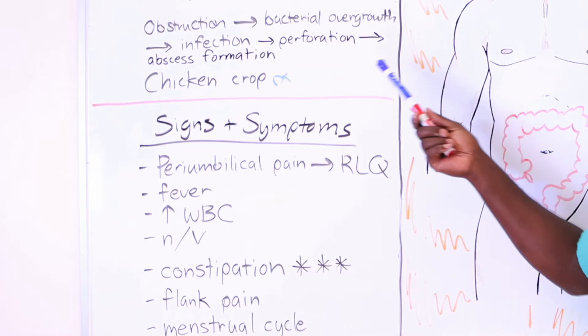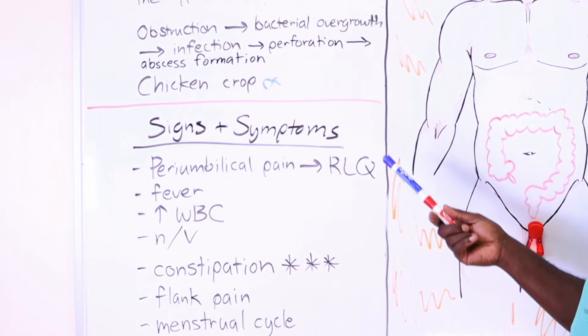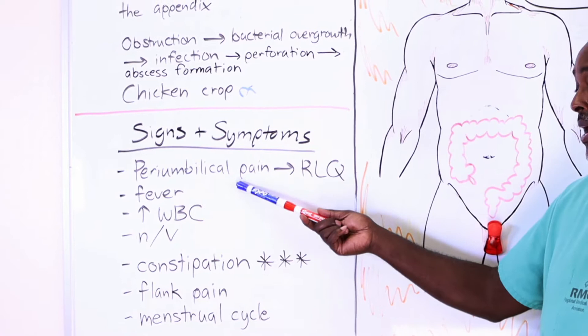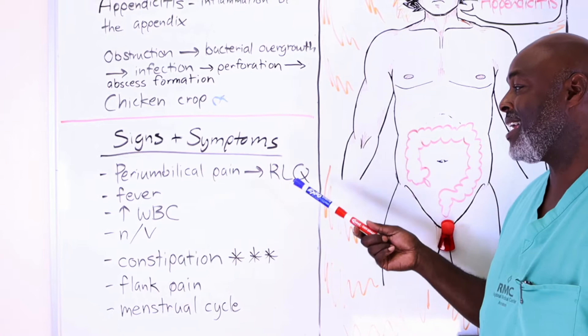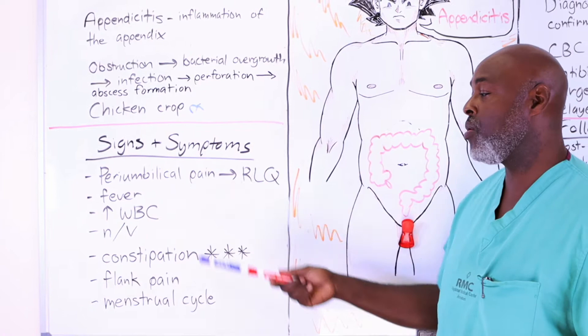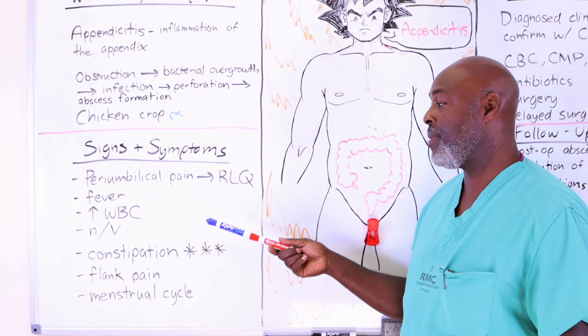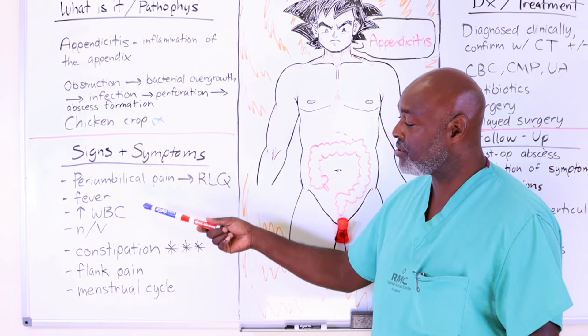Why do people get appendicitis? It could be infection, it could be a virus, it could be anything. The way you figure out whether or not you have appendicitis is to look at your symptoms. The classic symptom is peri-umbilical pain around your belly button radiating to the right lower quadrant. You can then have fevers, chills, an elevated white count — or actually a normal white count. Sometimes if you have nausea and vomiting with peri-umbilical pain, that's a sign it may be a virus.